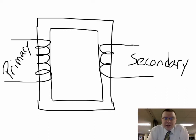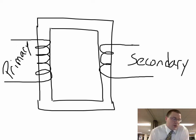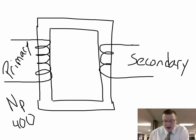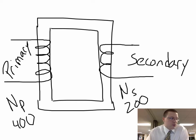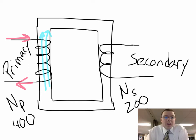Here is our transformer. What we have is a primary coil, or a primary solenoid, on one side of this piece of metal, and we have a secondary coil on the other side. We have certain turns on each side — let's say the primary coil has 400 turns and the secondary coil has 200 turns. The primary coil is where we're going to induce the voltage. If we send a current through the primary coil, it's going to change the flux and create a magnetic field right through the middle of coil one.